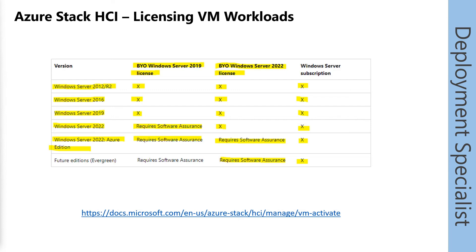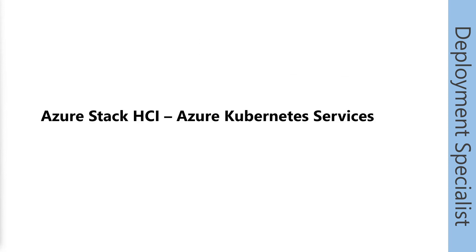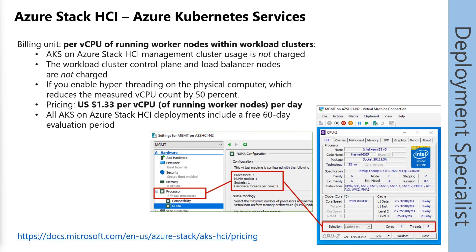We talked about the pricing for Azure Stack HCI itself and discussed the pricing for virtual machine workloads. But we also have more workloads we can run on Azure Stack HCI, for example Azure Kubernetes Services. Azure Kubernetes Services is available on Azure Stack HCI and is charged per virtual CPU of running worker nodes within your workload clusters — only running worker nodes within workload clusters. We take the advantage of cloud-based subscription-based billing where we only pay for running workloads.